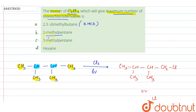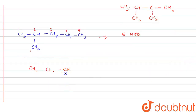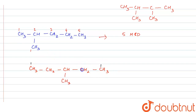Now we will see the next option: 3-methylpentane. The structure is CH3-CH2-CH(CH3)-CH2-CH3. In this molecule, carbons 1 and 5 are the same (labeled 1), carbons 2 and 4 are the same (labeled 2), carbon 3 is different (labeled 3), and the methyl branch is also different (labeled 4). So there are four possibilities, giving four monochloro derivatives.